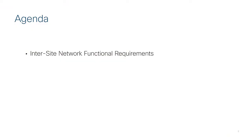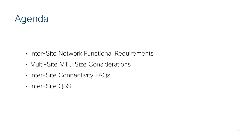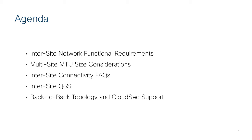In Module 2 of the ACI multi-site training, we are going to talk about the deployment considerations for the network interconnecting the different ACI sites, which usually takes the name of inter-site network. The module is divided in different topics. We will start talking about the different functionalities that the inter-site network must provide and we will finish talking about how to encrypt communication between sites using the Cisco CloudSec technology.